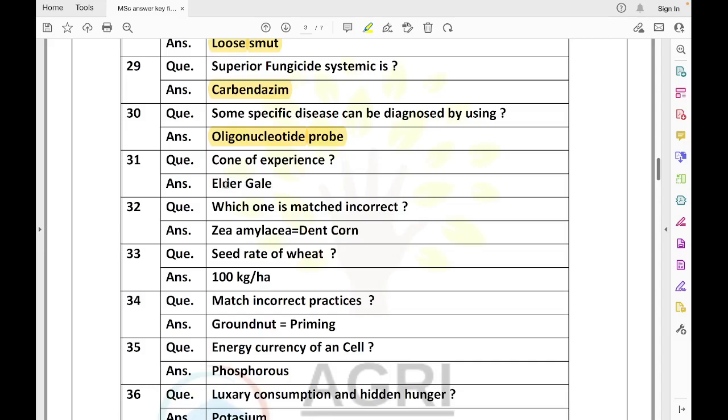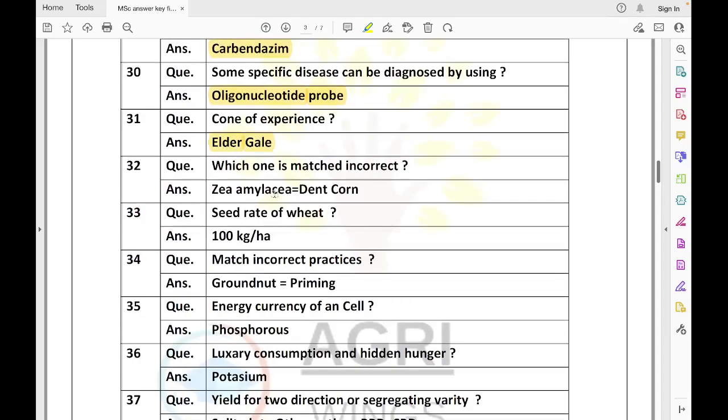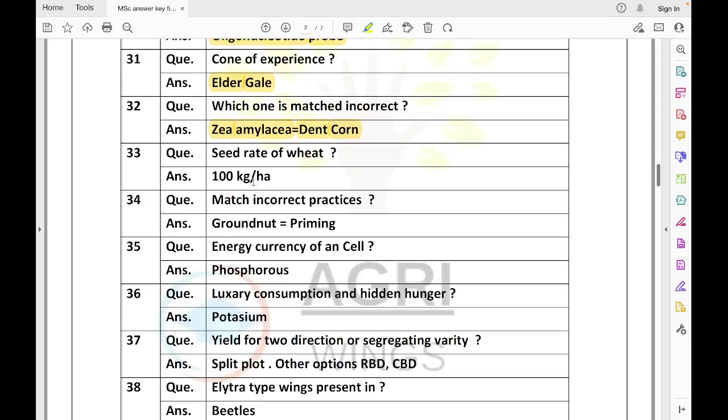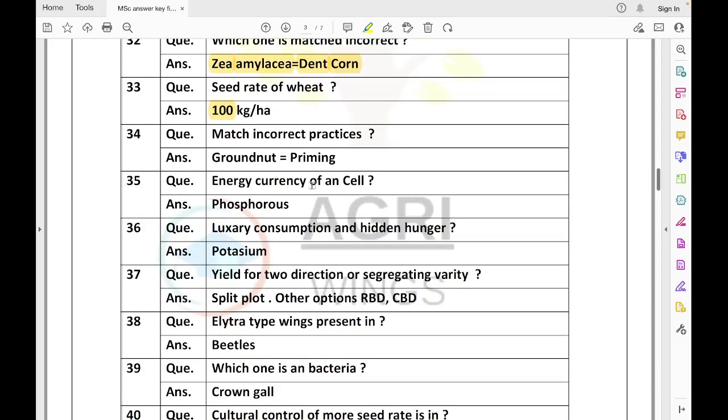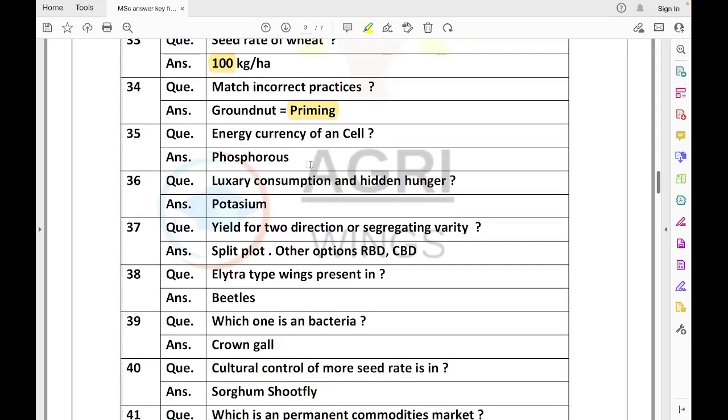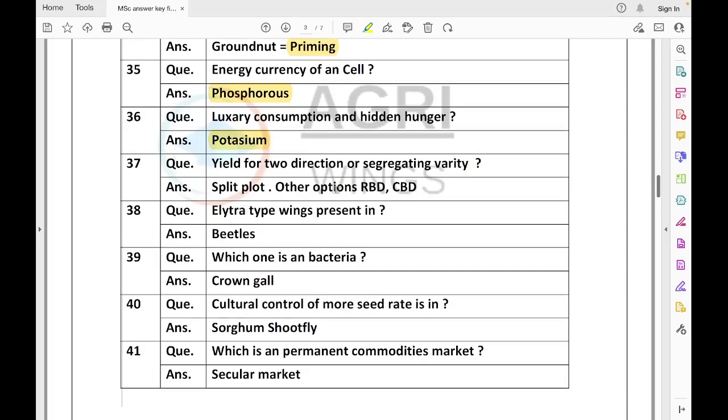This question is repeated. Only two questions repeated from previous years. Cone of experience was given by Edgar Dale. Among these, what was wrong? First agronomy question - Zea amylacea is a flour corn, not a dent corn. Dent corn is Zea indentata. Seed rate question again - wheat seed rate is 100 kg per hectare and 40 kg per acre. One intercultural practice - which one doesn't match? Groundnut doesn't use priming. Priming is done in tobacco.